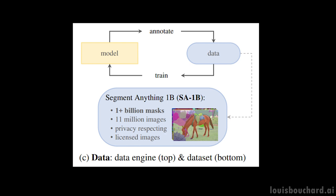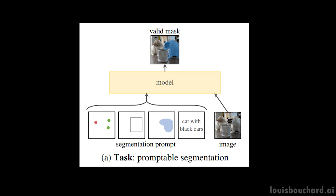But where is prompting used? It's used to say what we want to segment from the image. As we've talked in my recent podcast episode with Sander Shuloff, founder of Learn Prompting, which I think you should listen to, a prompt can be anything. In this case, it's either text or spatial information, like a rough box or just a point on the image, basically asking what you want or showing it.